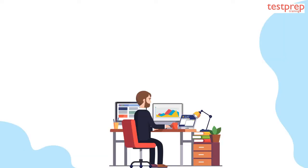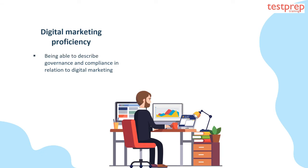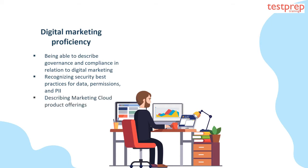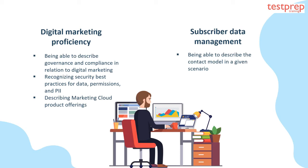Let us now discuss the course outline topics in detail. Number one, digital marketing proficiency. It contains: first, being able to describe governance and compliance in relation to digital marketing; second, recognizing security best practices for data permissions and PII; third, describing Marketing Cloud product offerings.